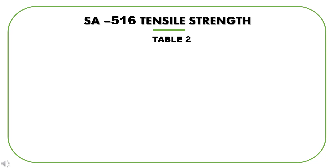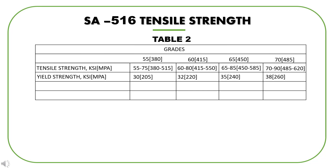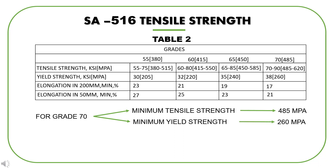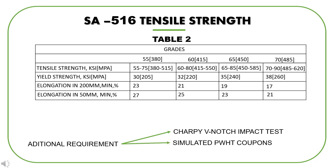Tensile testing requirements are covered in Table 2, which gives tensile strength, yield strength, and percent elongation. All material produced as per this specification shall meet these requirements. For Grade 70, the minimum tensile strength required is 485 MPa and the minimum yield strength is 260 MPa. We can also request additional testing from the mill, such as Charpy V-notch impact testing, simulated PWHT coupons, ultrasonic examinations, and many more. Each additional requirement given to mills means additional cost.